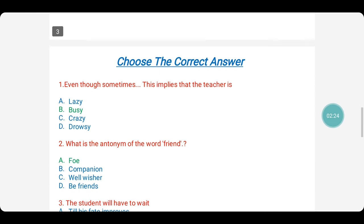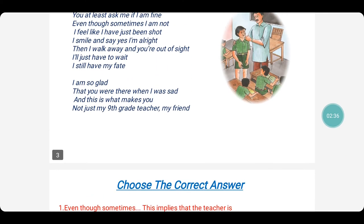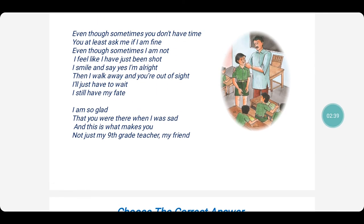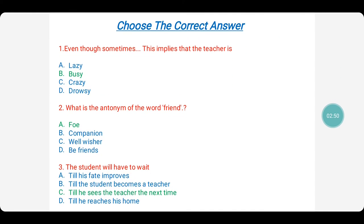On to the comprehension here. Choose the correct answer. Even though sometimes this implies that the teacher is. So, you see in the passage here. Even though sometimes you don't have time, you at least ask me if I am fine. So, here in this line, this implies that the teacher is lazy, busy, crazy, drowsy. So, as per the passage, it shows that even though you do not have time, that means the teacher is very busy.